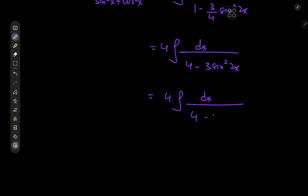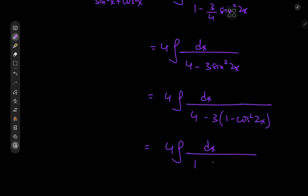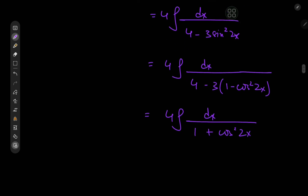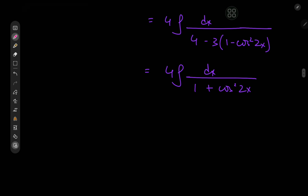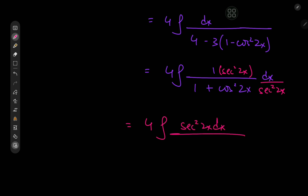We expand sin²(2x) as 1 minus cos²(2x), giving four times the integral of dx divided by 1 plus cos²(2x). We then multiply numerator and denominator by sec²(2x), giving four times the integral of sec²(2x) dx divided by sec²(2x) plus 1.